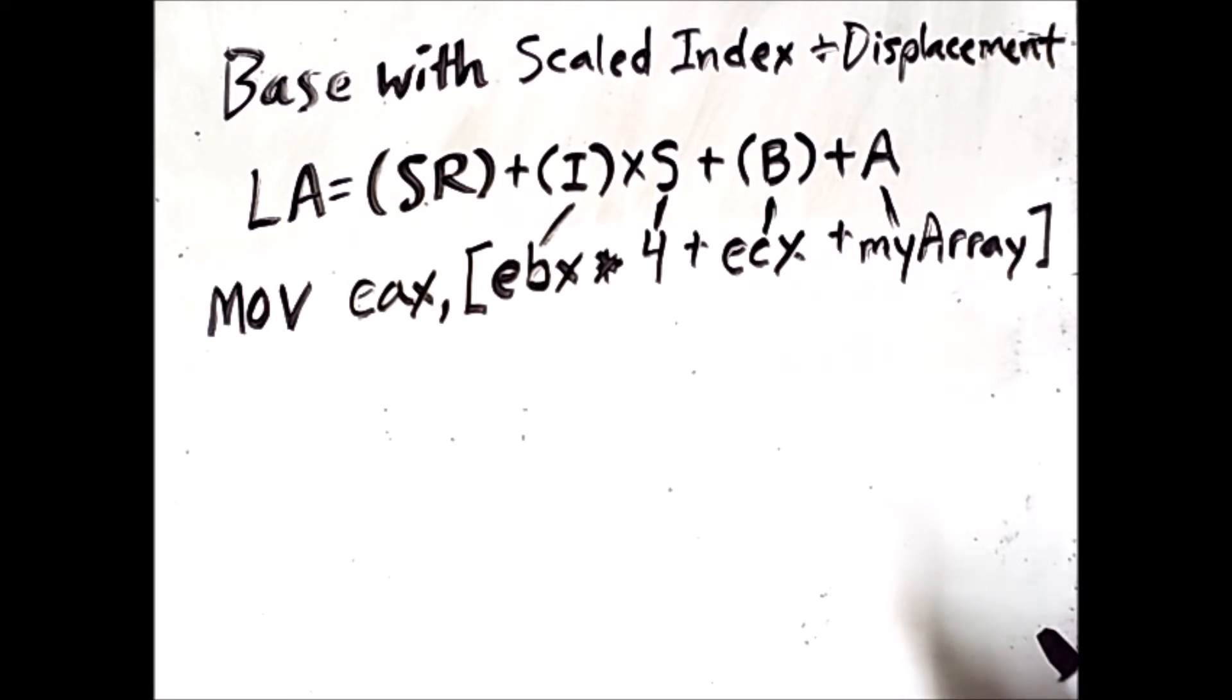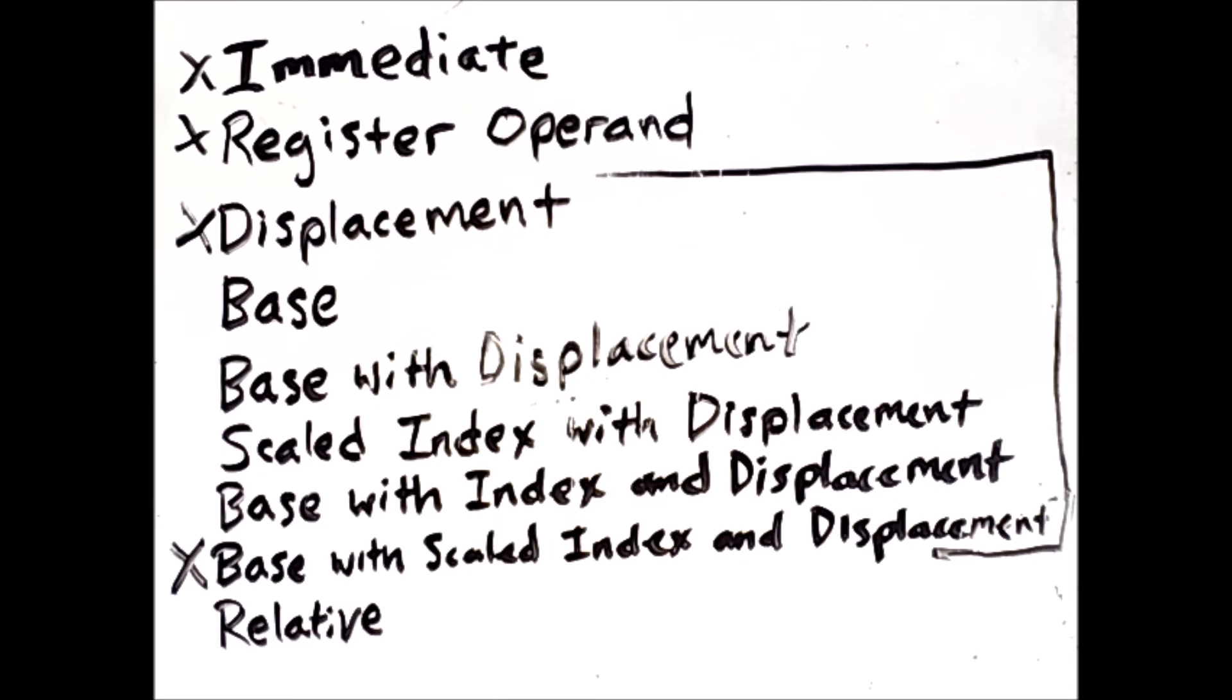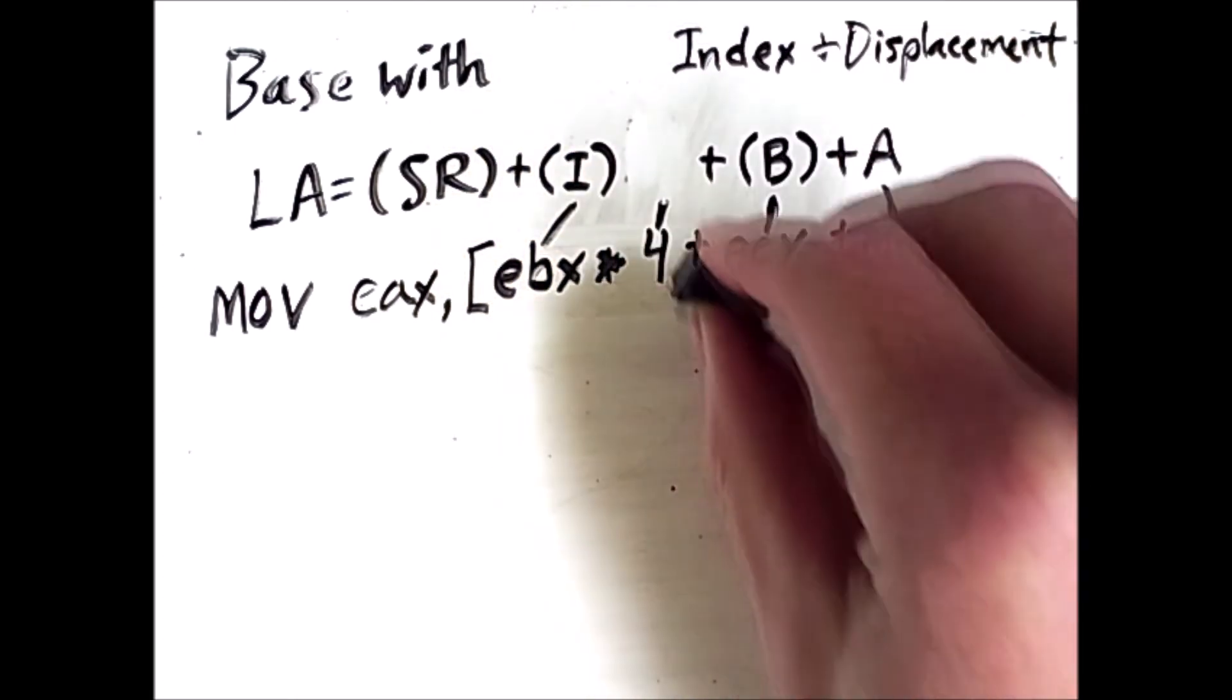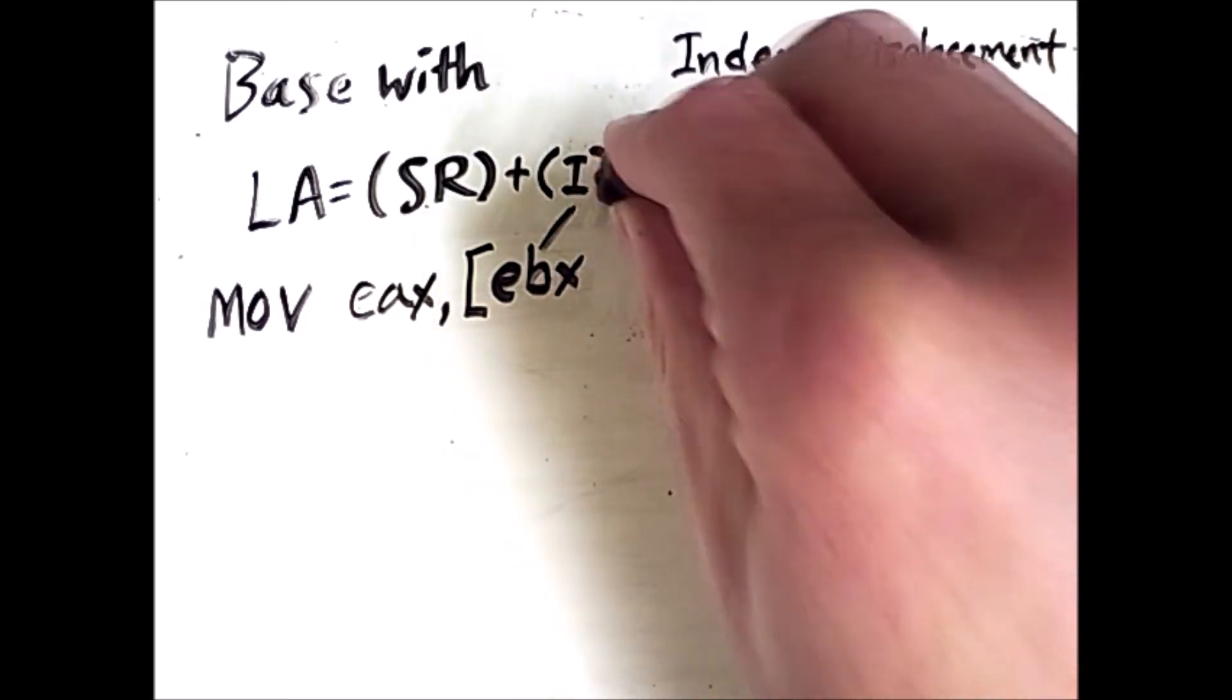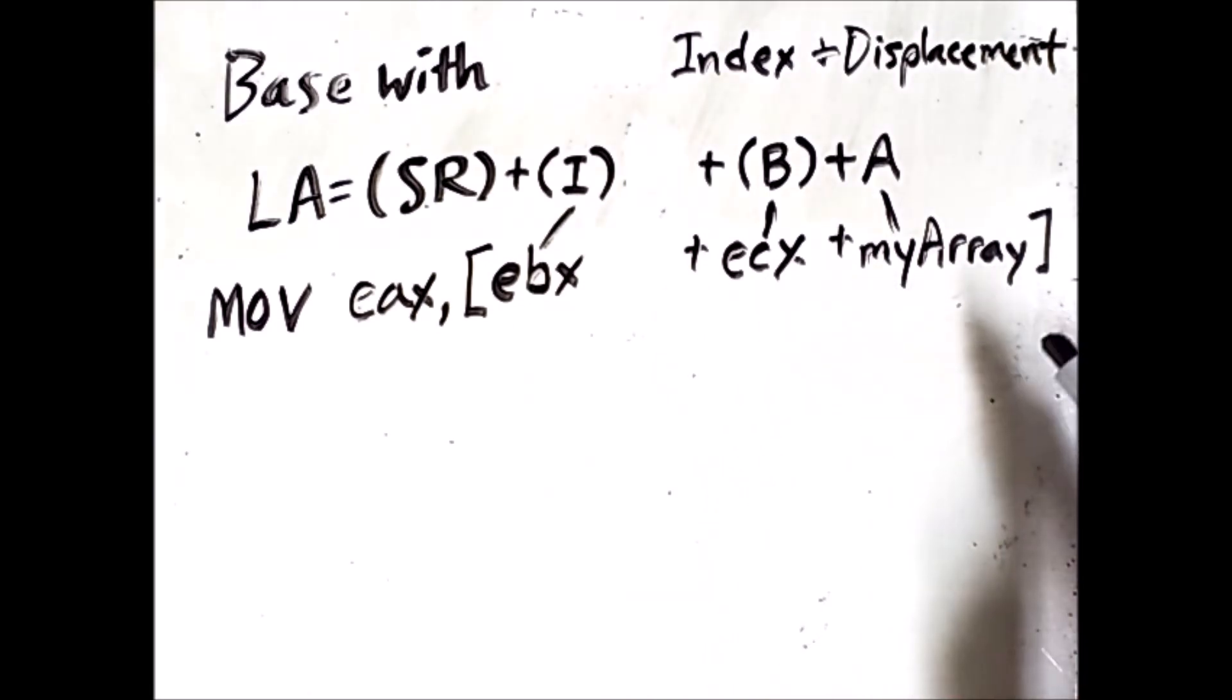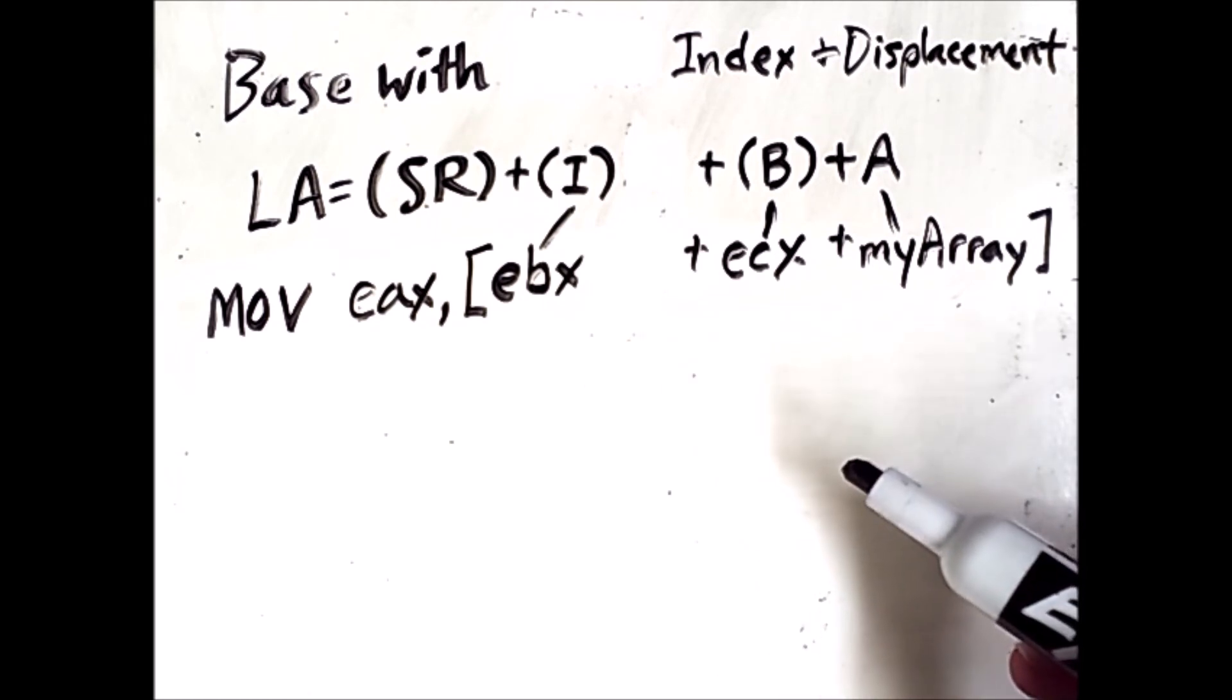But all we're really doing with the other addressing schemes is removing components of this formula. For example, going back to our list, if we move one step up, then we have base with index and displacement. All we've removed is the scale factor. The result is the following. So here, I'll remove scaled, and I'll also remove the scale factor, and I'll remove it from the actual command as well. And so I'm left with EBX plus ECX plus myArray. So this type of addressing would be appropriate if the scale factor happened to be 1, which is the case if you have, for example, an array of bytes as opposed to words or double words.